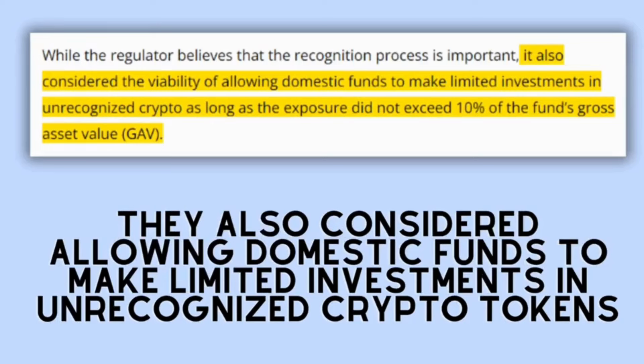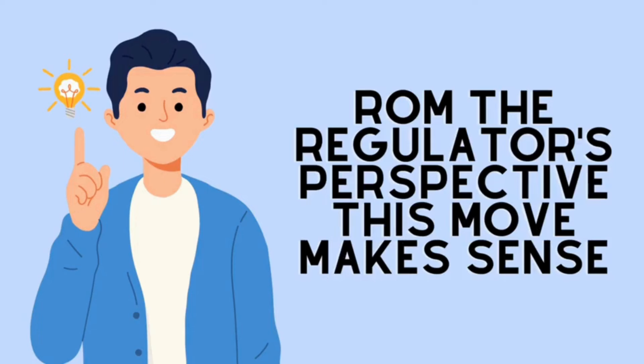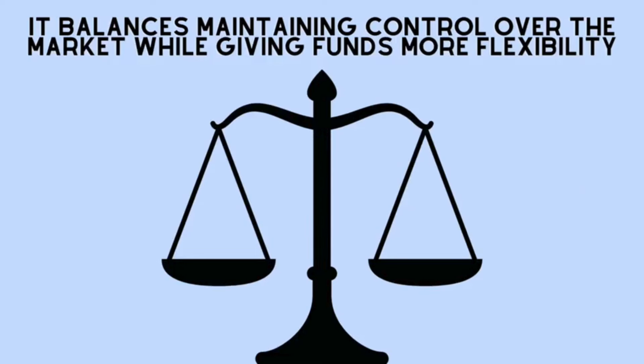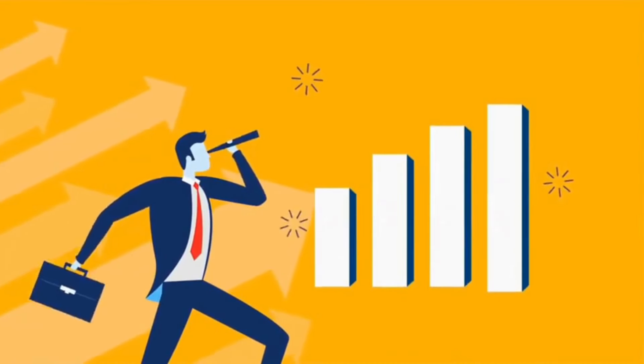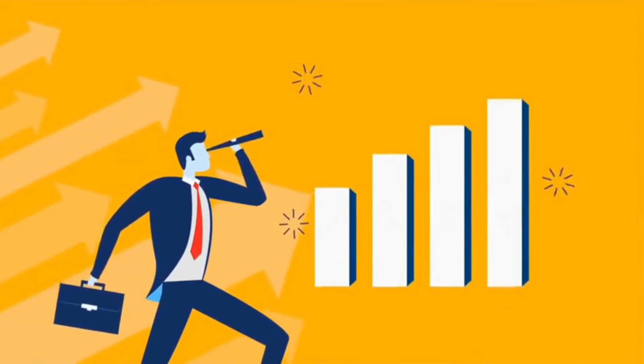While the regulator believes that the recognition process is crucial for maintaining a stable market, they also considered allowing domestic funds to make limited investments in unrecognized crypto tokens, as long as these investments don't exceed 10% of the fund's total value. And from the regulator's perspective, this move makes sense. It balances maintaining control over the market while giving funds more flexibility. It encourages investment and growth within the sector without compromising overall stability.